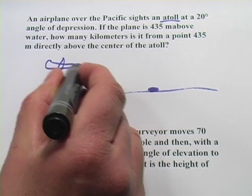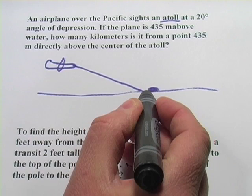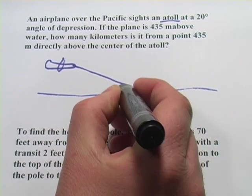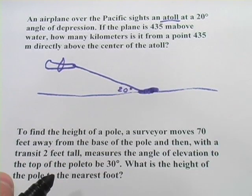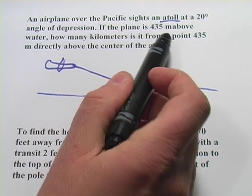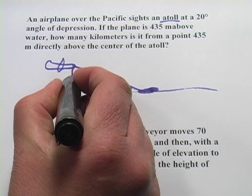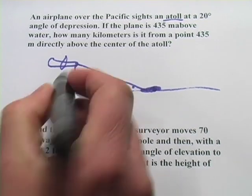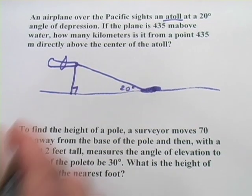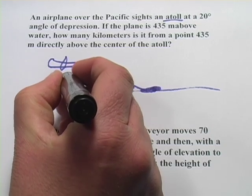What that means is, from the cockpit, the pilot is looking down, and it forms a 20-degree angle here to see the island. It says if the plane is 435 meters above, so we'll just drop a perpendicular straight down. That makes this a right triangle. That's handy. So this is 435 meters.